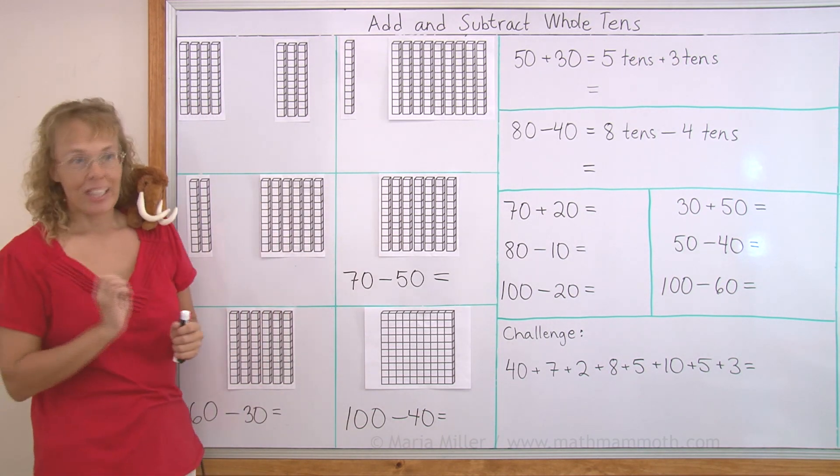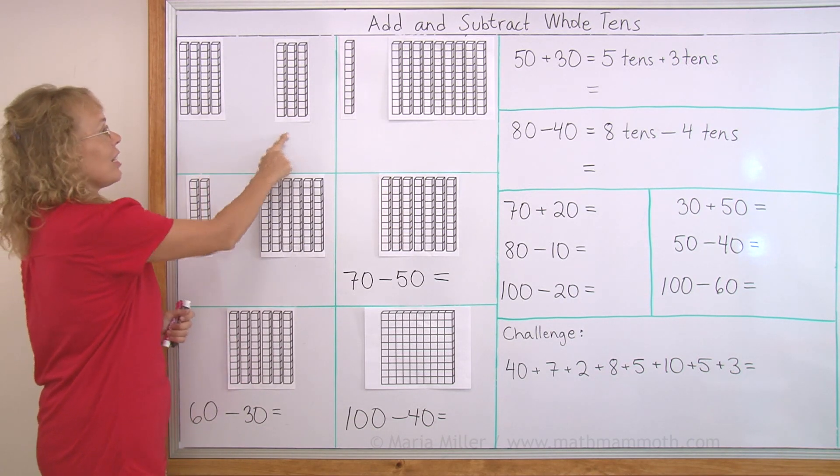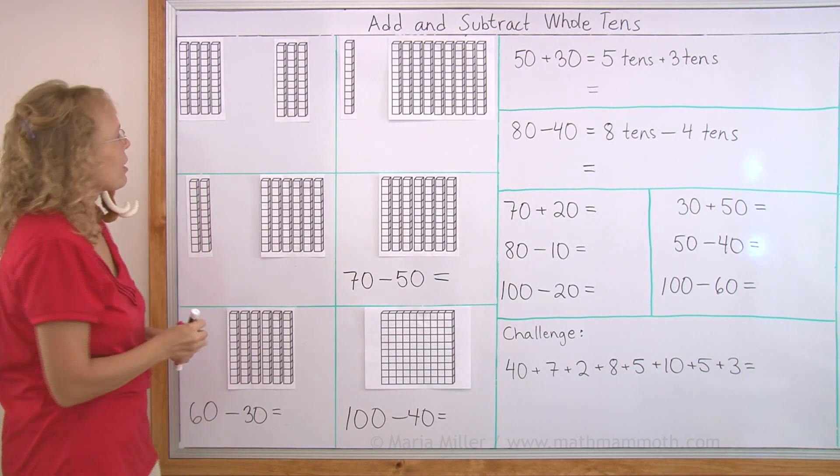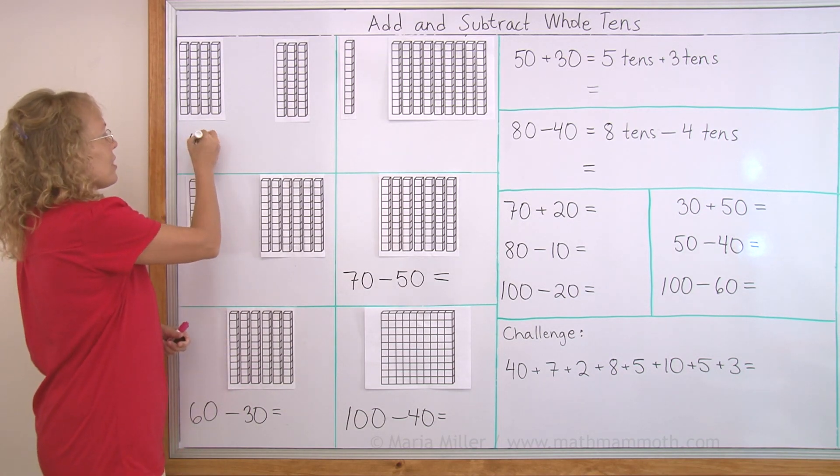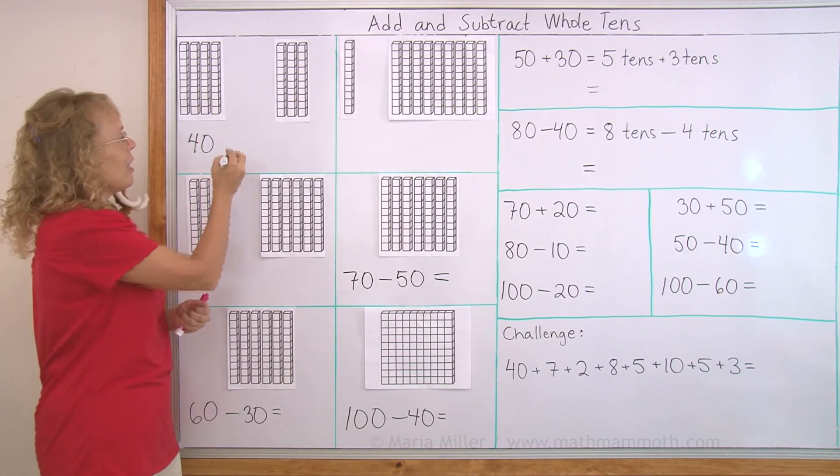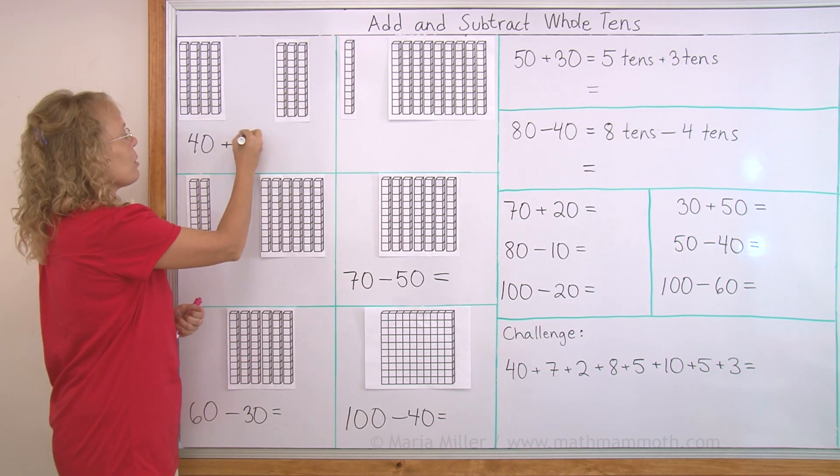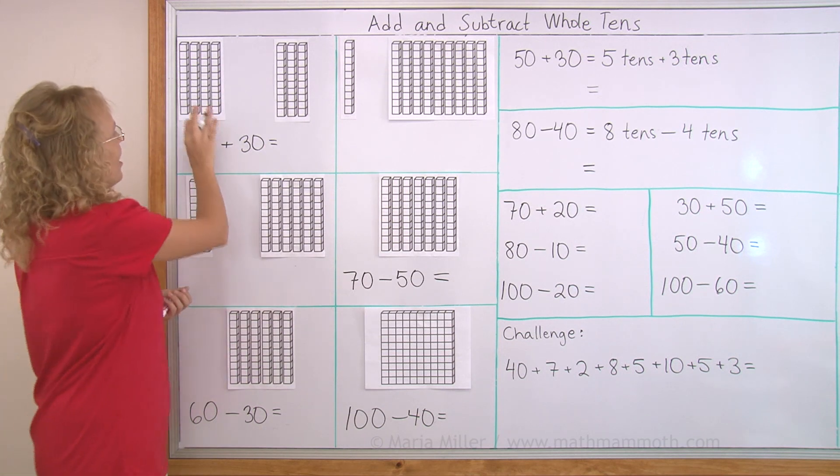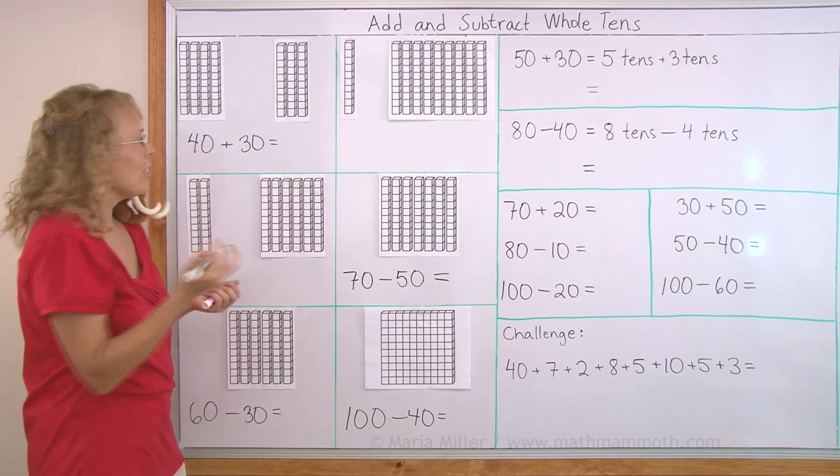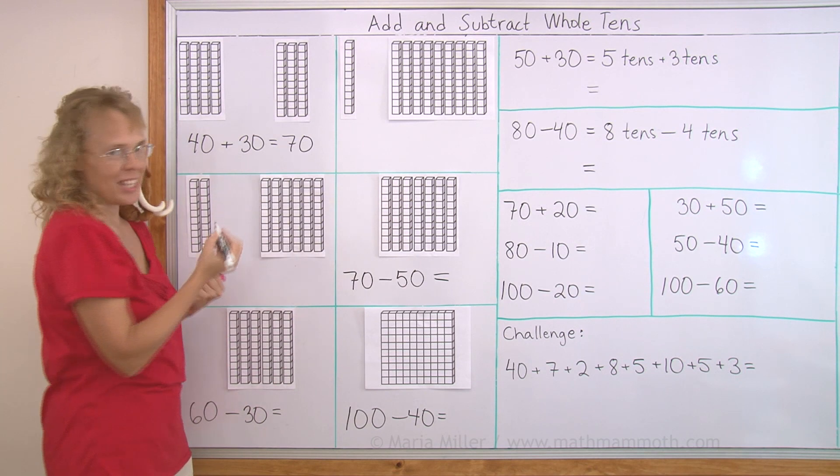For example, here I have four tens and here I have three tens. So we're going to write an addition. Four tens I write as 40. And then I add three tens which is 30. So how much do I get in total? I would get seven tens. And that is written as 70, seven zero.